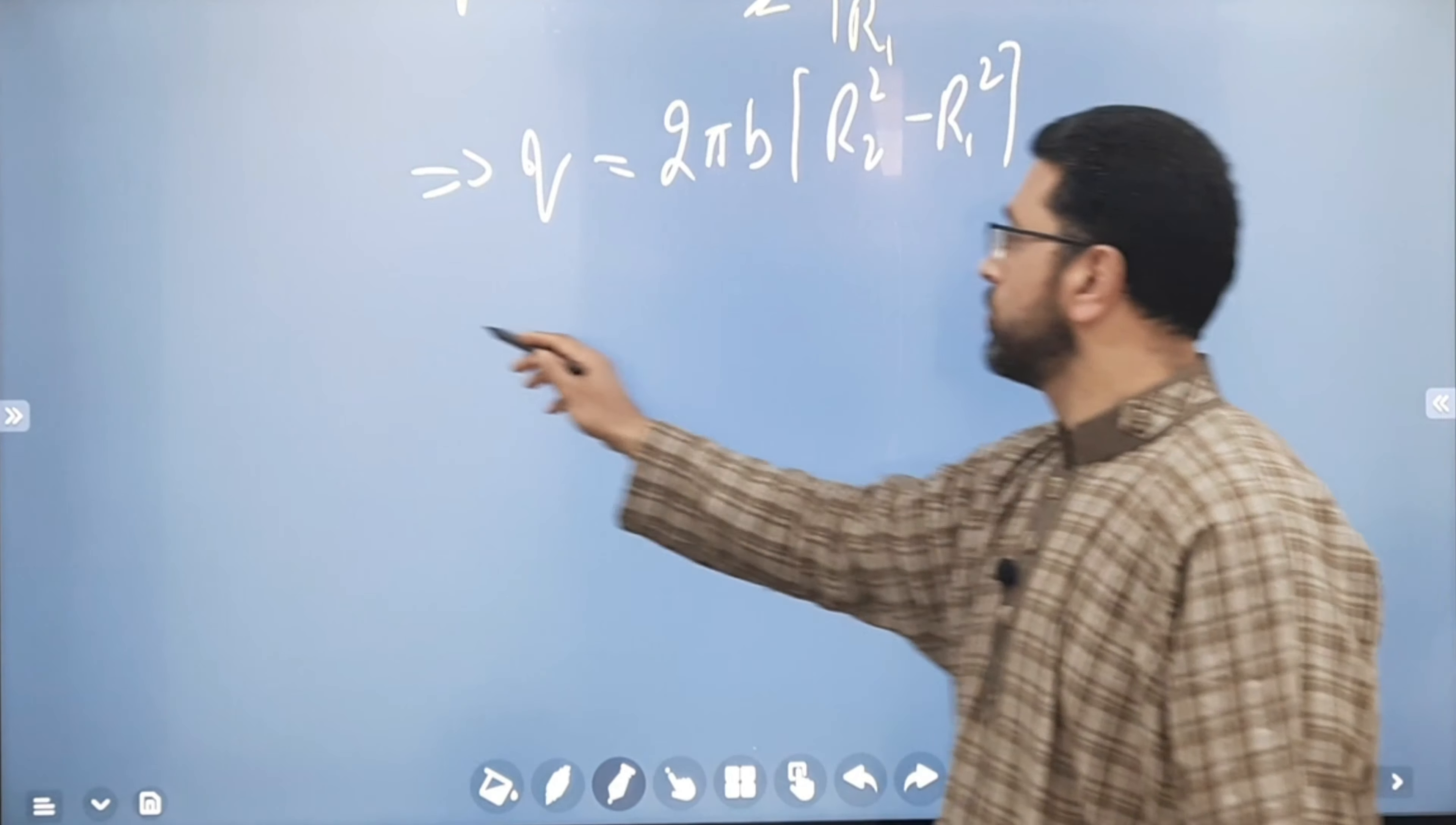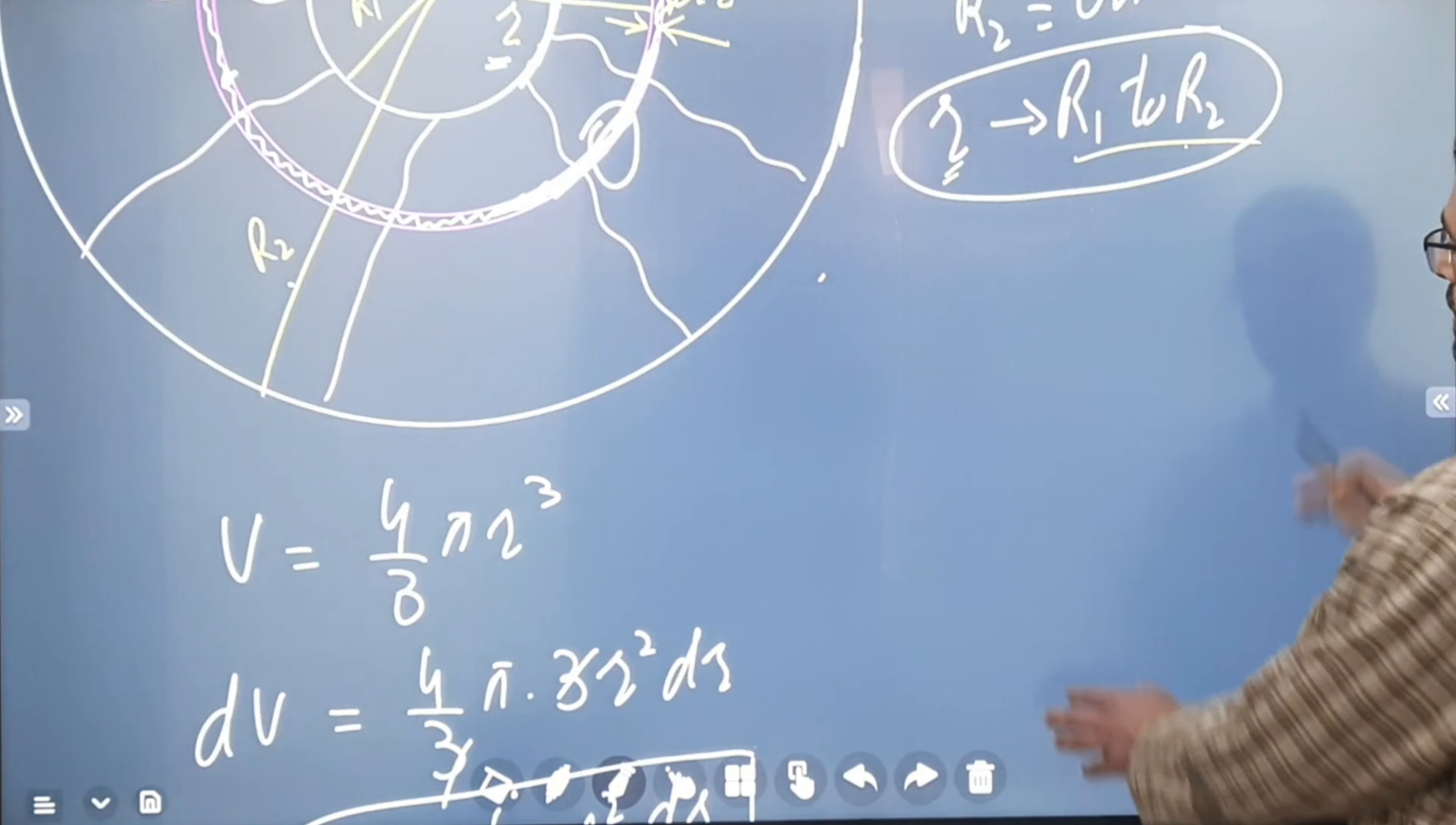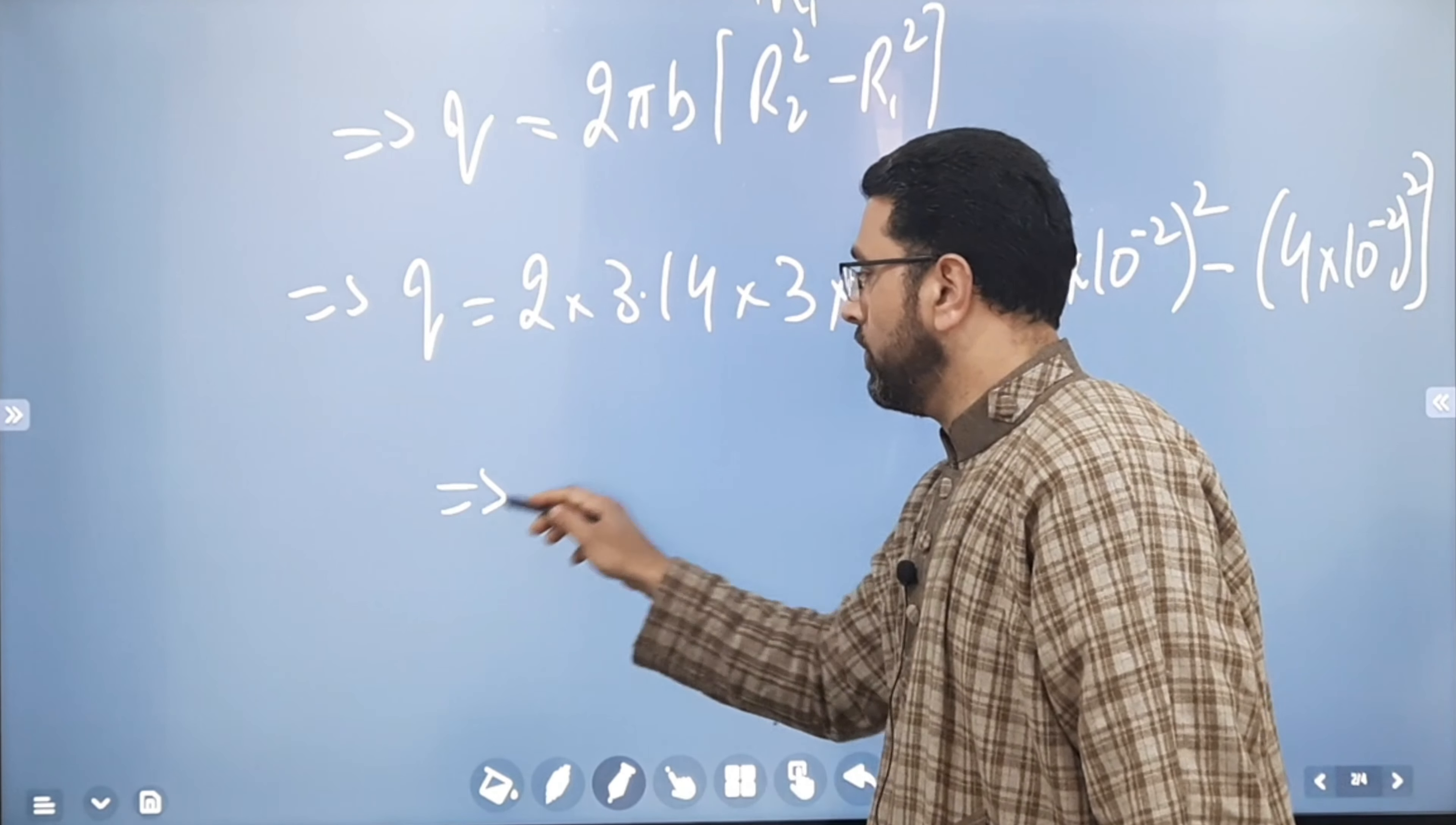Let's substitute the values. Q is equal to 2 into 3.14 into B, remember, was 3 microcoulomb per, so 3 into 10 to the power minus 6. Then, R2, the outer radius, remember, is 6 centimeters. So, 6 into 10 to the power minus 2 meters with the square. Minus inner radius is 4 centimeters. So, 4 into 10 to the power minus 2 with the square there.